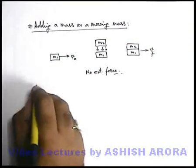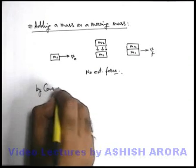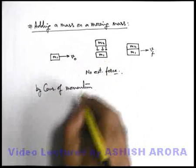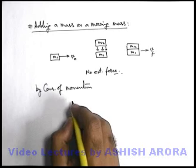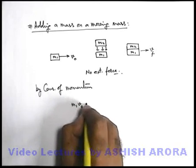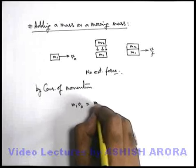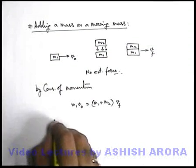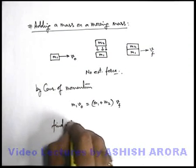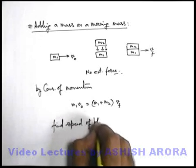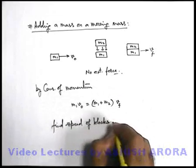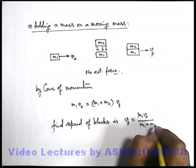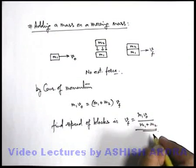The final speed of the system will certainly change — say it changes to v_f. By conservation of momentum, the initial momentum before adding mass m₂ onto m₁ was m₁ × v₀, and the final momentum after addition is (m₁ + m₂) × v_f. So the final speed of the combined blocks is v_f = m₁v₀ / (m₁ + m₂). This is the way we handle such types of problems.